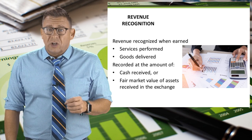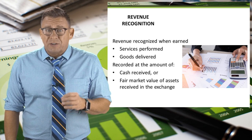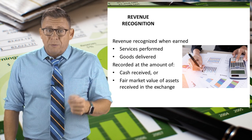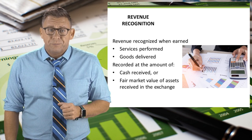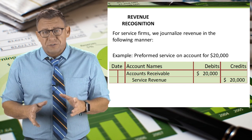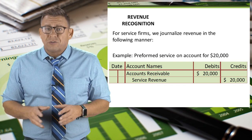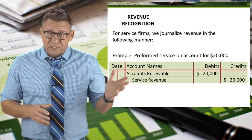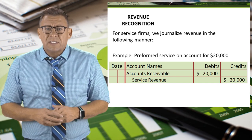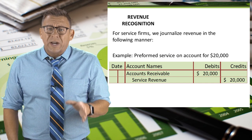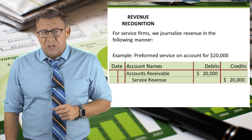The amount of the journal entry is the fair value of the asset received — usually that will be cash, but not always. For service firms, we record revenue by debiting accounts receivable (or cash in some cases) and crediting service revenue for $20,000.